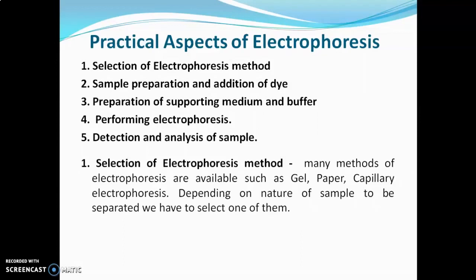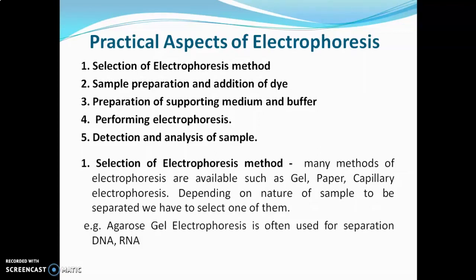For the first step — selection of electrophoresis method — many methods are available such as gel, paper, and capillary electrophoresis. Depending on the nature of the sample to be separated, we select one of them. For example, agarose gel electrophoresis is often used for separation of DNA and RNA.